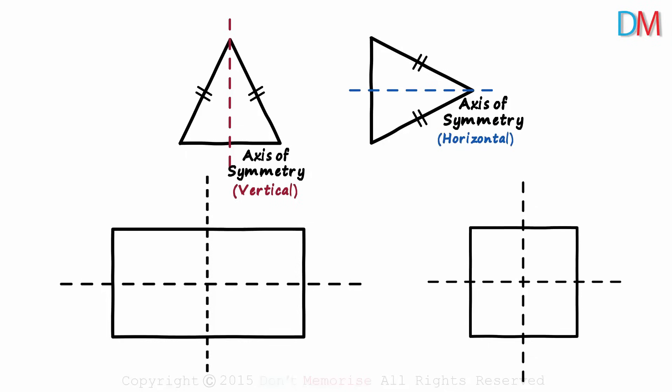But for a square, the two diagonals will also be the axis of symmetry. If we fold it along this diagonal, the parts match.